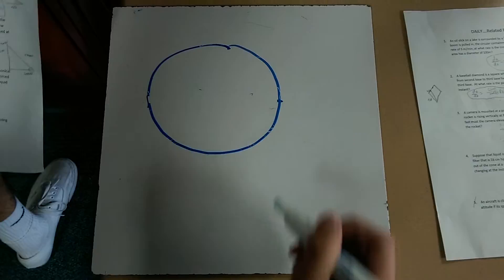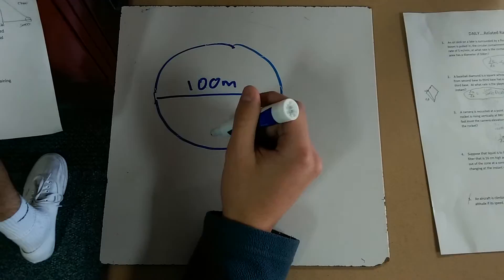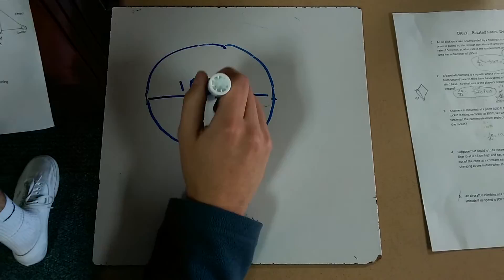So the question states that the containment area has a diameter of 100 meters. So we know it's 100 meters. And it also says that it has a rate of 5 meters per second. But it's being pulled in, so that's negative 5 meters per second.